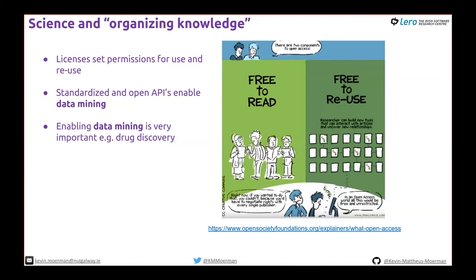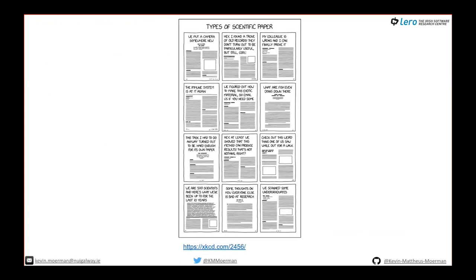For example, computational systems have been developed to study particular cancer drugs — especially FDA-approved ones — and use machine learning to propose new medicine cocktails by data mining current literature. That has been successful several times. But several journals have closed APIs, so you're not allowed to harvest information from articles in an automated or even manual sense. Science could progress much faster if there were a clear free-to-use-and-reuse license and papers were discoverable not just by humans but by machines.